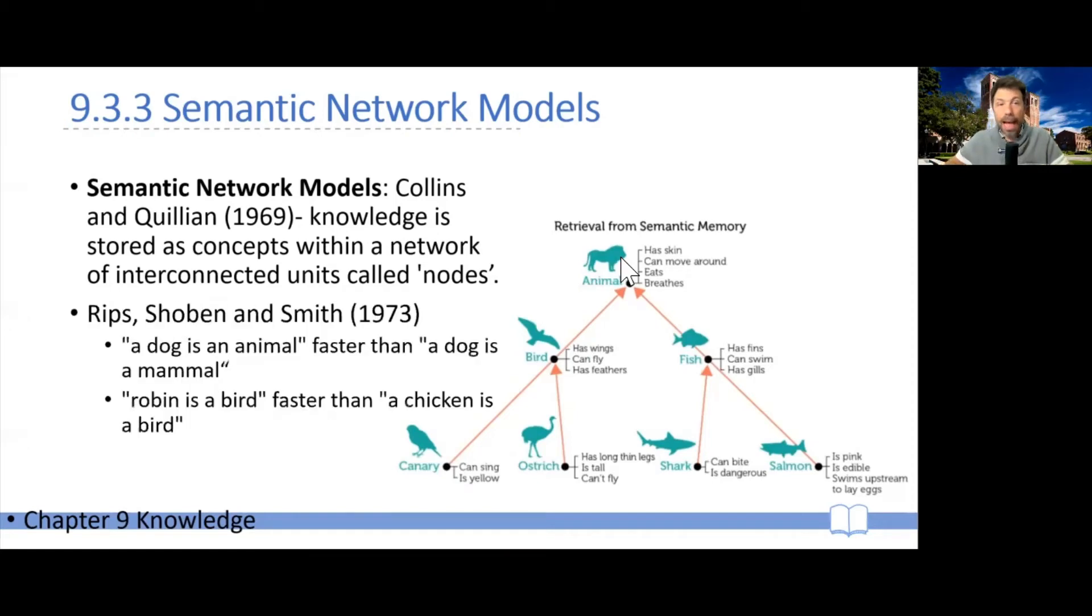However, there was data also to the contrary. Rips, Chauvin, and Smith in particular, they showed that actually sometimes participants are faster at responding to, at verifying sentences that actually unite things that are further away. For example, it turns out that participants are faster at verifying a dog is an animal compared to verifying a dog is a mammal.